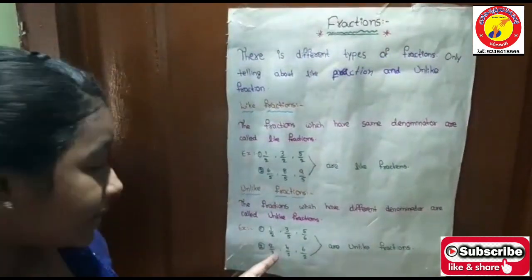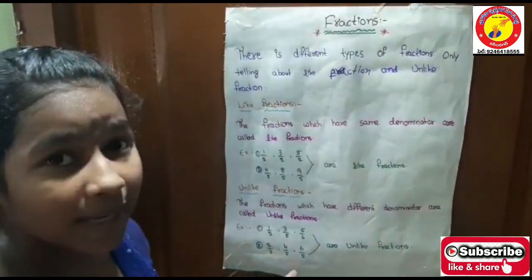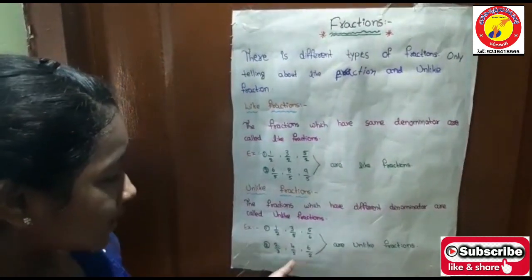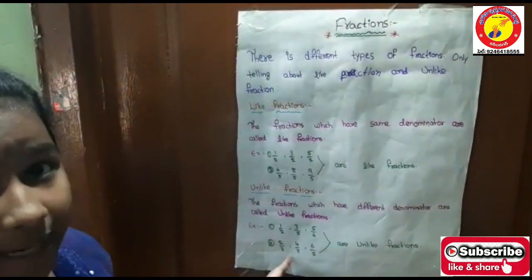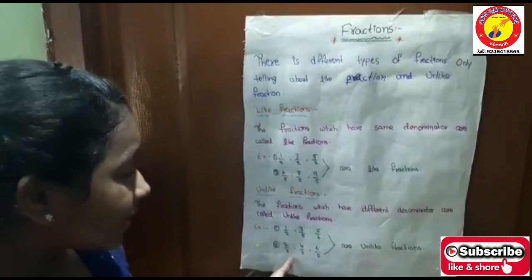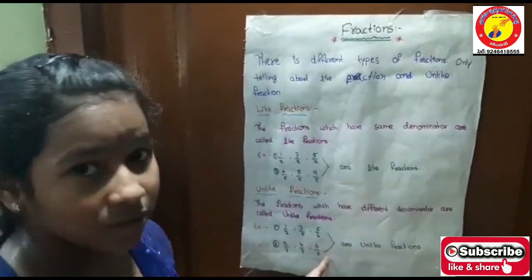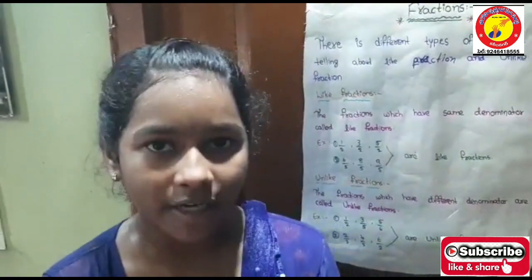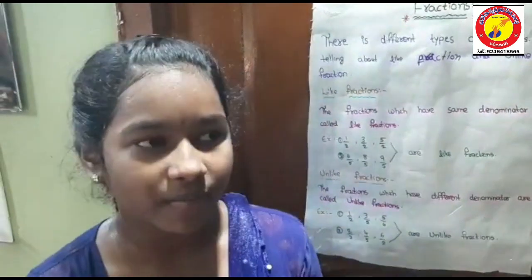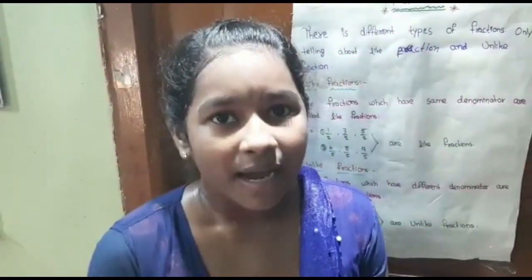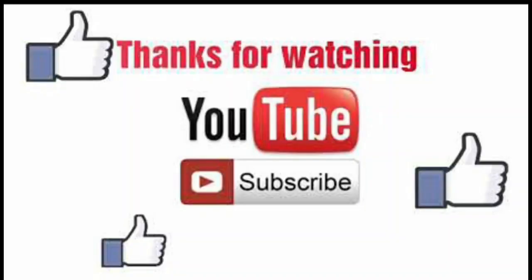Second example: 2/3, 4/5, 6/2. See, the denominators are different numbers — 3, 5, 2. So they are called unlike fractions. Thank you for giving this golden opportunity for Barossa programs. Stay home, stay safe. Have a nice day.